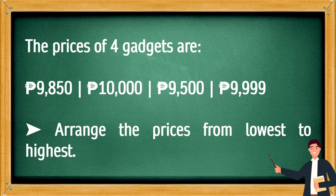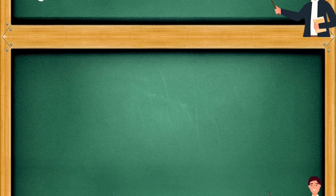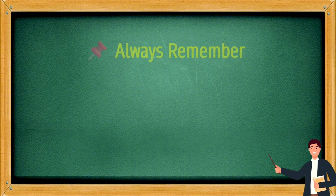The prices of 4 gadgets are 9,850, 10,000, 9,500, and 9,999. Arrange the prices from lowest to highest.